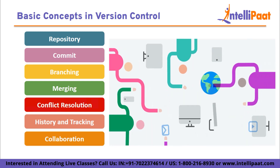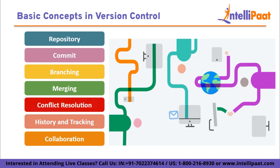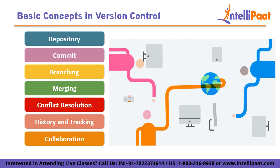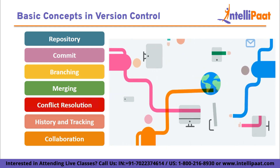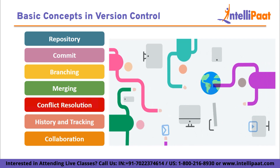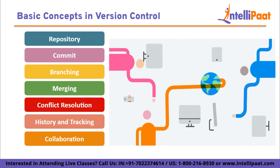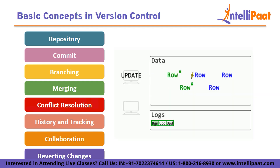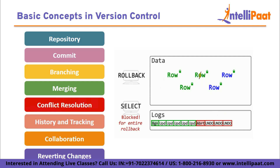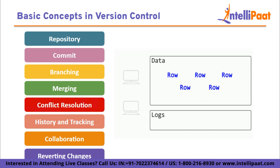Collaboration: Version control facilitates collaboration among team members. Multiple developers can work on the same project simultaneously with the ability to share and synchronize changes seamlessly. Reverting changes: Version control enables you to roll back to a previous state of your project. If a mistake is made or an undesired change occurs, you can easily revert to a previous commit, ensuring project stability.